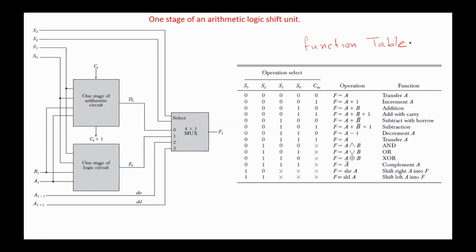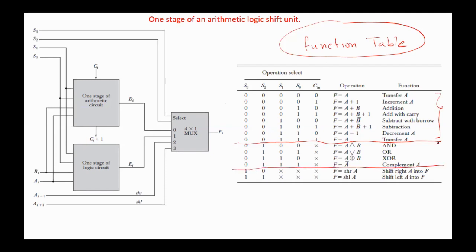This one stage of an arithmetic logic shift unit works according to the following function table. These are the eight arithmetic micro operations, and these are the four logic micro operations. The last two operations are shift left and shift right micro operations. On S3,S2 = 0,0, DI is selected and transferred to the output of the mux. On S3,S2 = 0,1, EI is transferred to the output. On 1,0, we have shift right, and on 1,1, shift left micro operation.